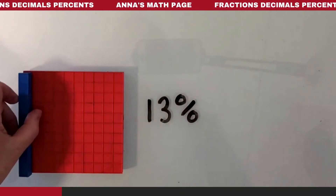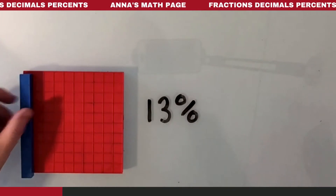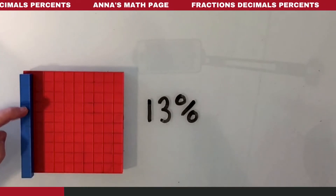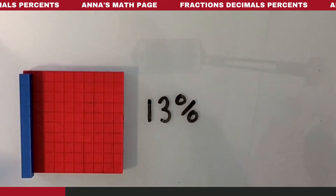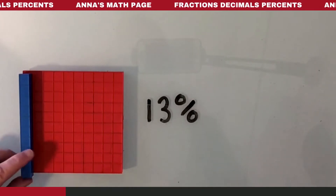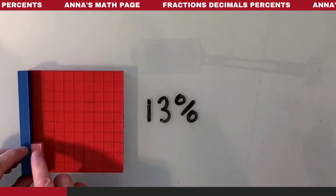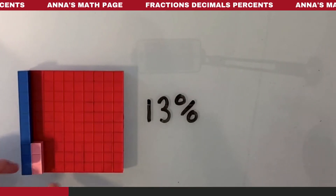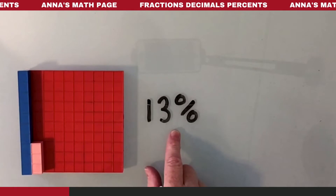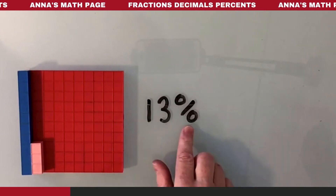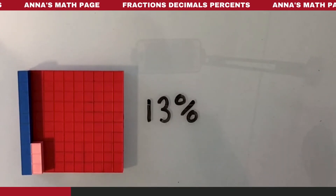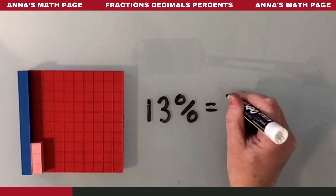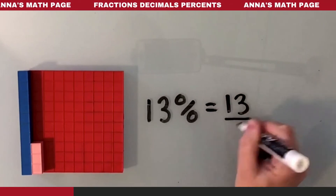So here's 10, and counting up to 13 — 13 out of 100. We can write that as 13%. We could write that as 13 out of 100.